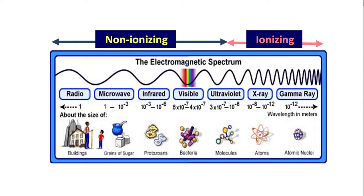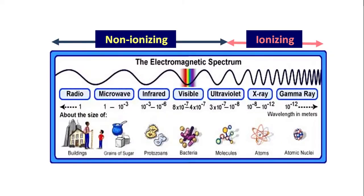I will divide the spectrum into two halves: non-ionizing radiation and ionizing radiation. Non-ionizing radiations include radio waves, microwaves, infrared, visible light, and up to ultraviolet. Starting from radio waves up to ultraviolet I call them non-ionizing radiations, and whatever is beyond ultraviolet I call ionizing radiations. Ionizing radiation is something which may be harmful to a human body.